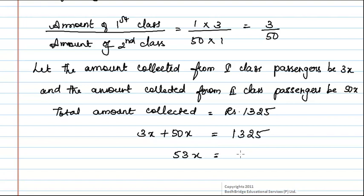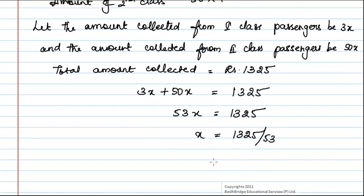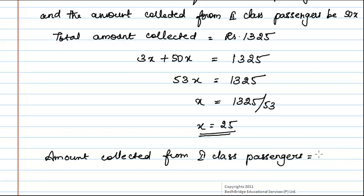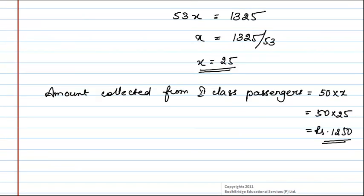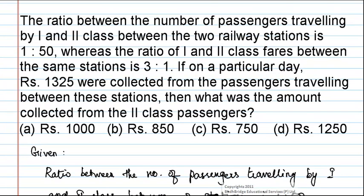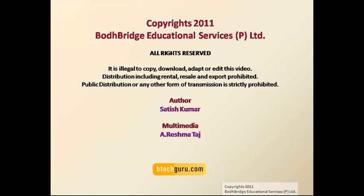Therefore 53x is equal to 1325 and x is equal to 1325 divided by 53, which is equal to 25. From this we can find the amount collected from second class passengers, which is equal to 50 into x, which is equal to 50 into 25, and it is equal to 1250. Here x is the amount collected from each passenger. Hence the amount collected from the second class passengers is rupees 1250, which is option D. Thank you.